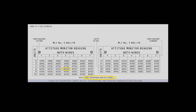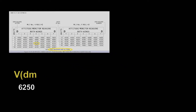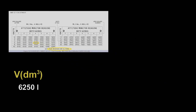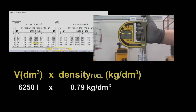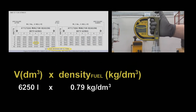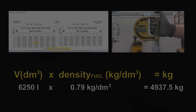For fuel mass calculation, the volume has to be multiplied with the density of the fuel. Add together the values for each tank to find the total mass of fuel in the aircraft.